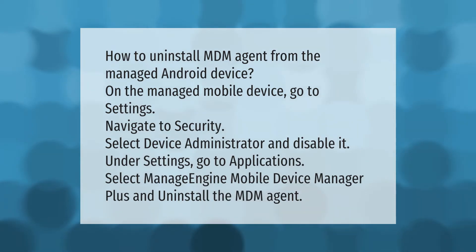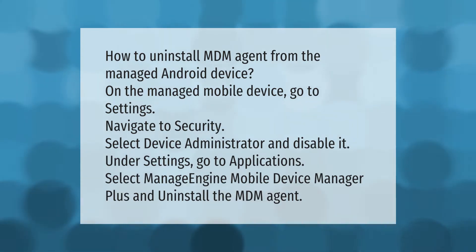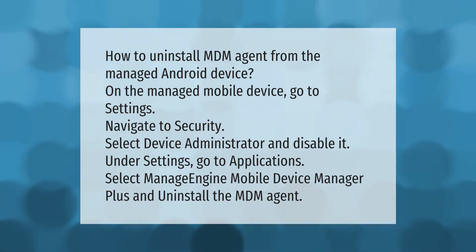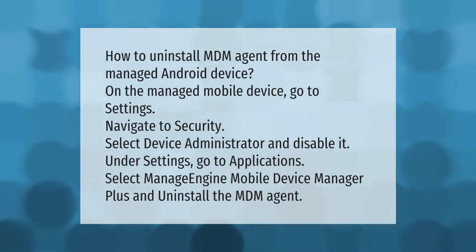How to uninstall MDM agent from the managed Android device. On the managed mobile device, go to Settings, navigate to Security, select Device Administrator and disable it. Under Settings, go to Applications, select ManageEngine Mobile Device Manager Plus, and uninstall the MDM agent.